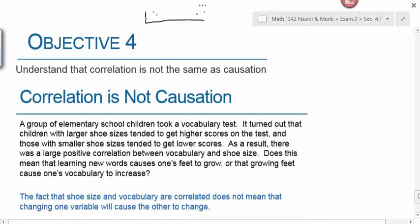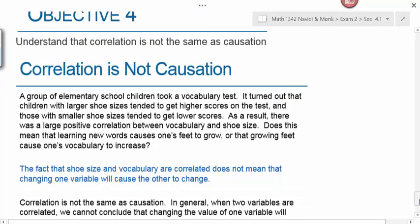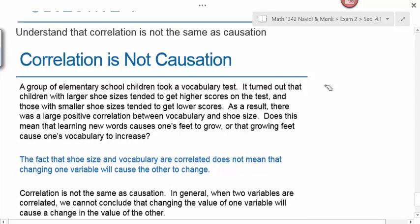Finally, objective 4 is to understand that correlation is not the same as causation. Here's a good little anecdote that illustrates that point. A group of elementary school children took a vocabulary test. It turned out that children with larger shoe sizes tended to get higher scores on the test and those with smaller shoe sizes tended to get lower scores. As a result, there was a large positive correlation between vocabulary and shoe size. Does this mean that learning new words causes one's feet to grow or that growing feet causes vocabulary to increase? Not necessarily. Actually not at all.